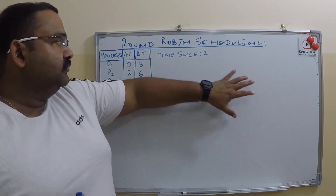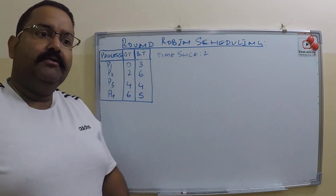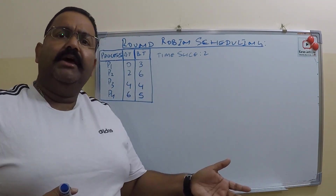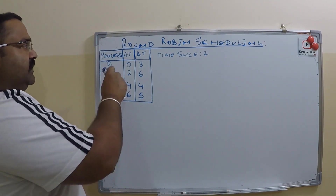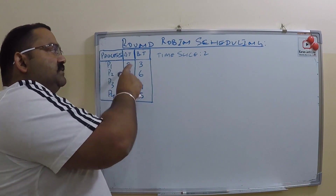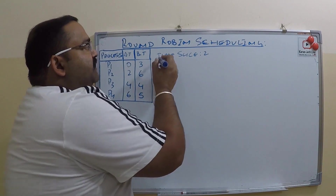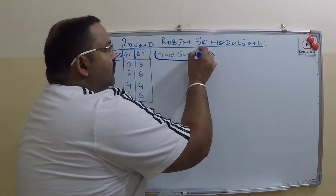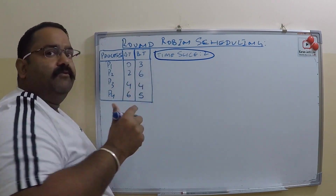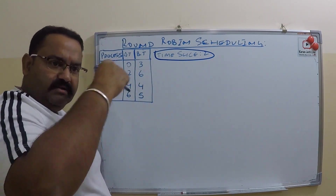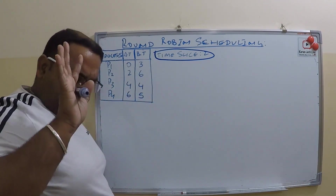To explain this, we are going to draw a Gantt chart and then calculate the average waiting time and turnaround time. Here are the processes with their arrival times and burst times, and the CPU time slice is two seconds. The CPU will process each for two seconds, repeating until all processes are done.